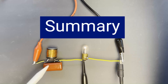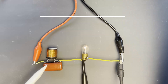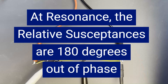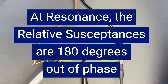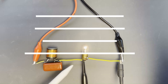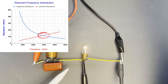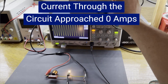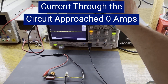To summarize, we discussed the concept of parallel resonance and what it is. We discussed how at the resonant frequency the susceptance of the capacitor and inductor are 180 degrees out of phase and cancel each other out. The effective impedance of the parallel capacitor-inductor arrangement approached infinite ohms. We also demonstrated this phenomena using a parallel capacitor-inductor in series with a light bulb, where as the parallel resonant frequency was approached the light bulb dimmed out until it finally turned off completely.